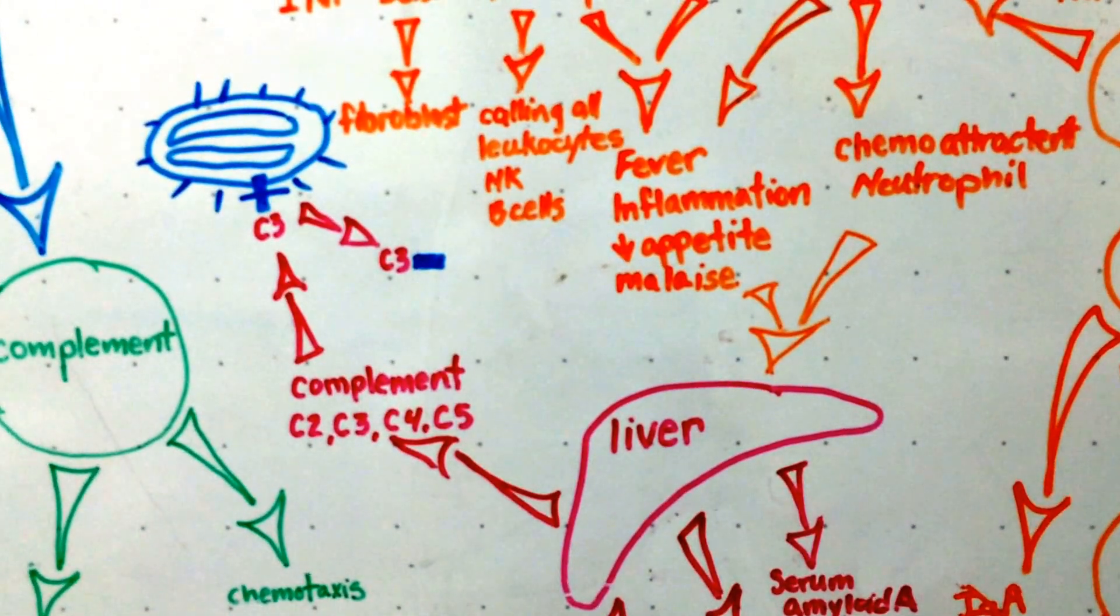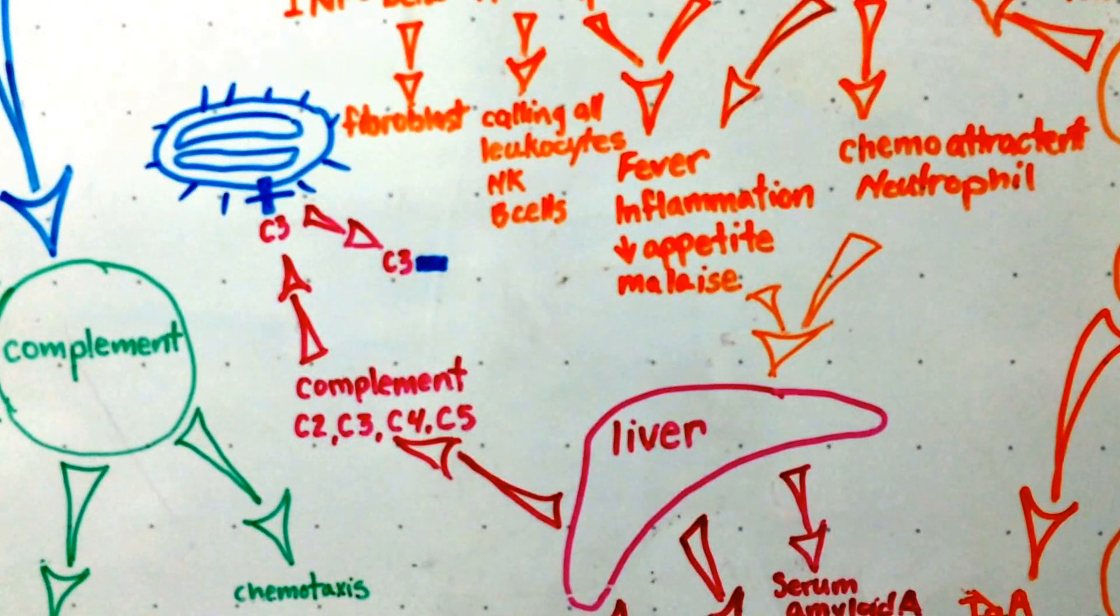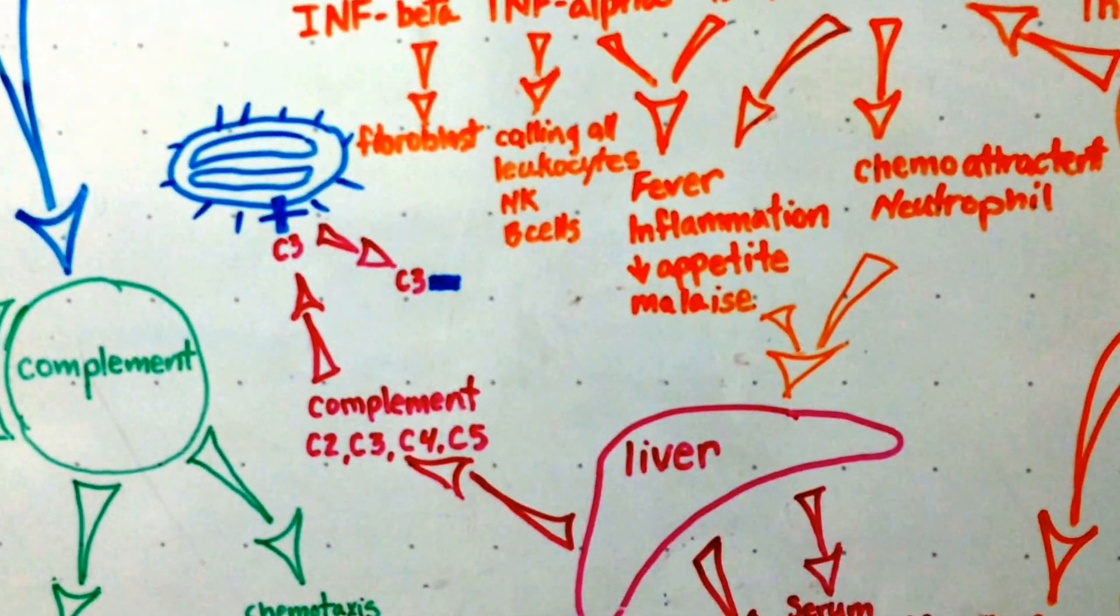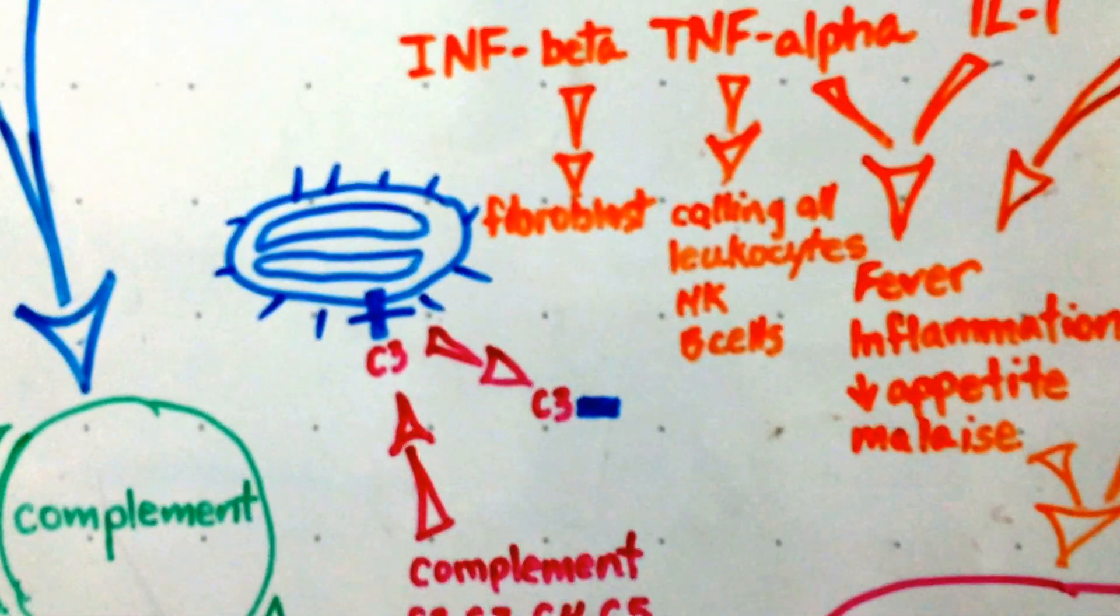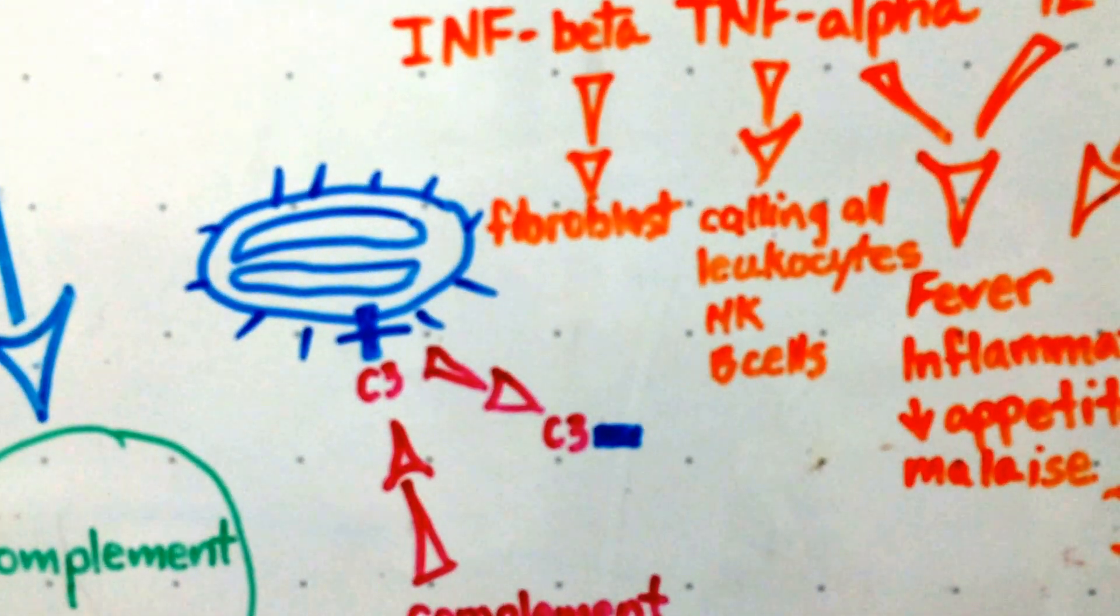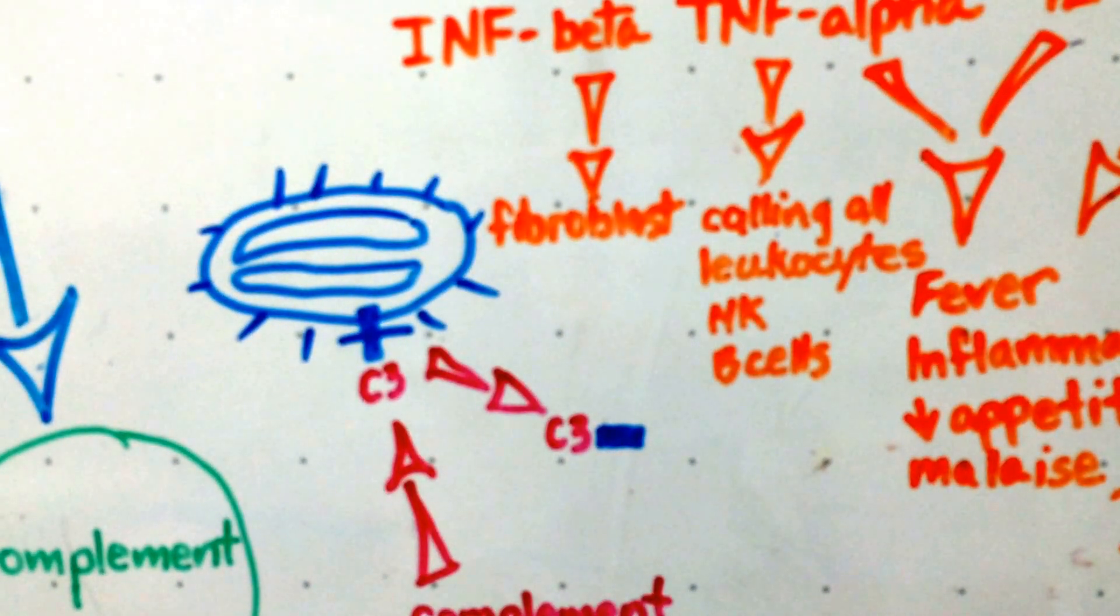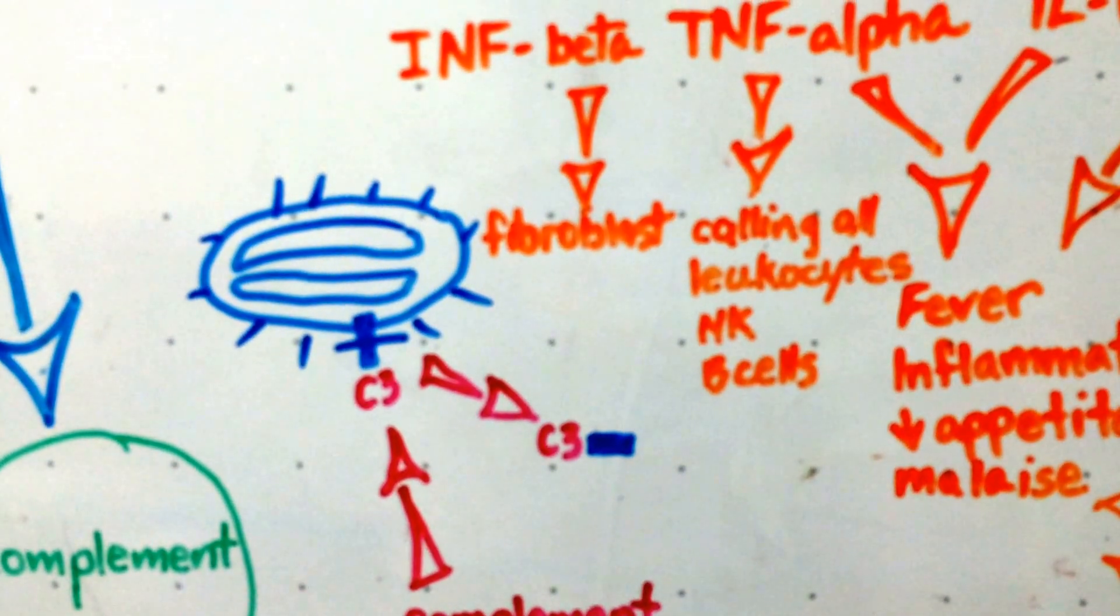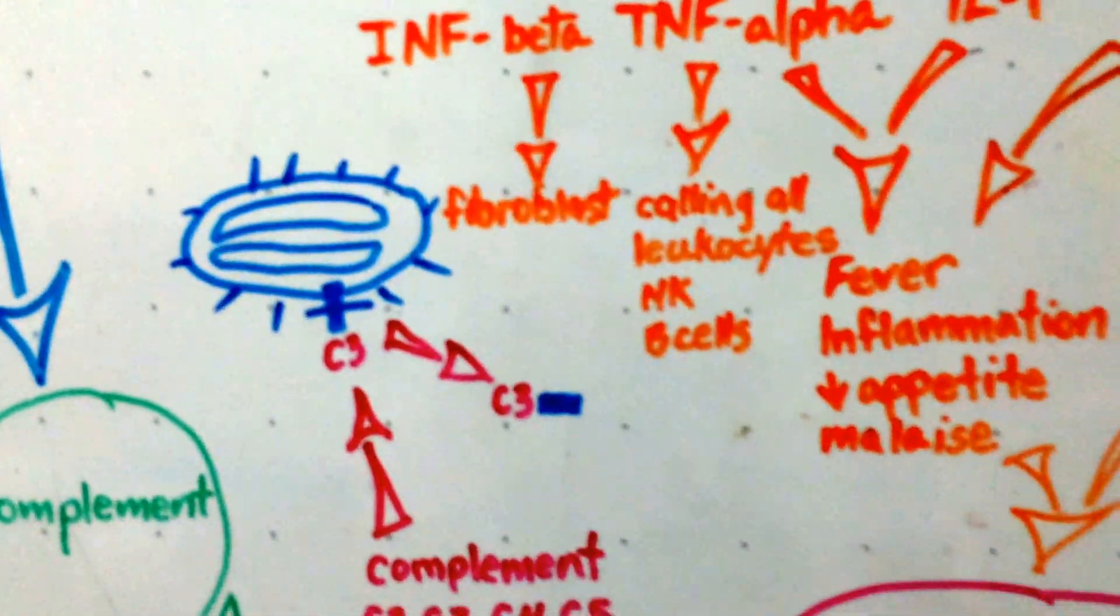And then the liver produces more complement. So C3 is produced and we know that C3 pathway. Now, this particular bacterium has avoided that pathway as we learned earlier. It used an enzyme to get rid of that C3 attached to it. And that's the NAIP that does that.